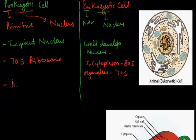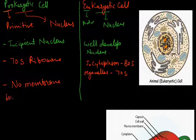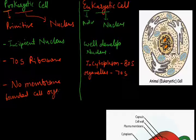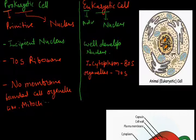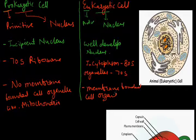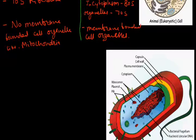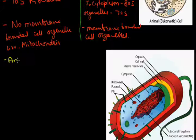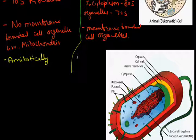Prokaryotic cells have no membrane-bounded cell organelles — no mitochondria, chloroplasts, lysosomes, etc. Eukaryotic cells do have membrane-bounded cell organelles. Additionally, prokaryotic cells divide by amitotic division, while eukaryotic cells divide by mitosis and meiosis.